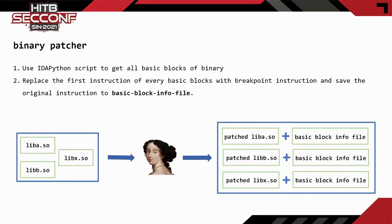First, I will introduce the implementation of the binary patch module. The input of the binary patch module is the executable file that needs to be instrumented, such as a library. The output is the patched file and the basic block info file. The basic block info file stores each basic block's information from the binary file, including the virtual offset, the file offset, and the first instruction of each basic block. The user provides some modules that need to be instrumented, such as liba.so, libb.so, libx.so.